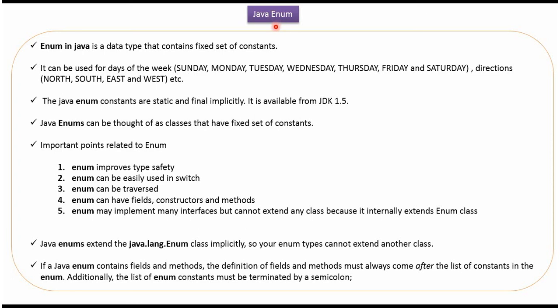Hi, in this video tutorial I will cover enum. Enum is a data type that contains a fixed set of constants. Enum can be used for days of week, directions, etc. Enum constants are static and final implicitly. Enum is available from JDK 1.5. Enums can be thought of as classes that have a fixed set of constants.